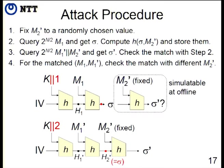In the next step, he prepares 2^(N/2) different two-block messages M1 prime and M2 prime, where M2 prime is always a fixed value. He checks for collisions between these values and sigma prime. If a collision occurs, it may suggest an internal collision, or it could be just a collision in the second block. To eliminate noise, for step four, for the matched M1 and M1 prime, he checks the match with a different M2 prime — then only the internal collision is obtained.